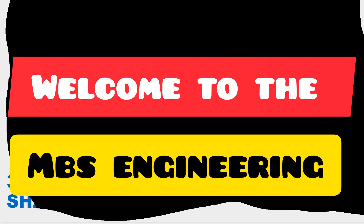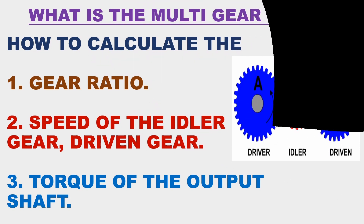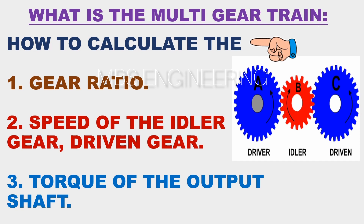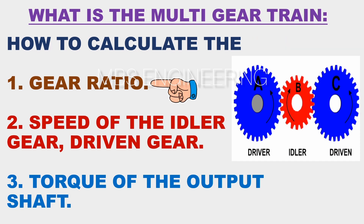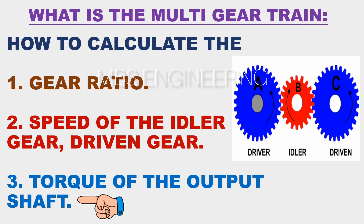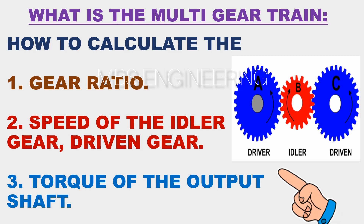Welcome to the MBS Engineering channel. In today's video, we will discuss what is the multi-gear train and how to calculate the following parameters: the gear ratio for multi-gear trains, the speed of the idler gear and driven gear, and the torque of the output shaft or driven gear for multi-gear trains. We will cover the above calculations in upcoming slides.